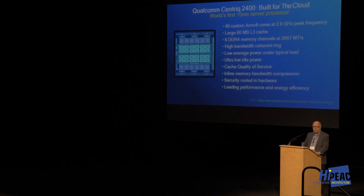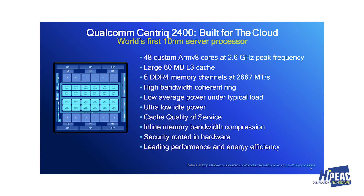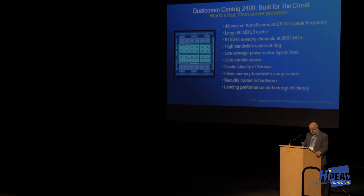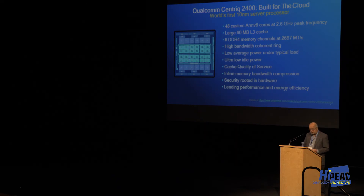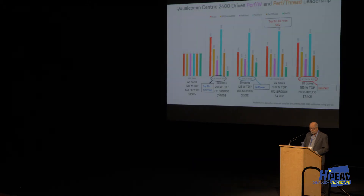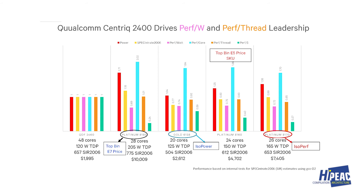What did we do with our first server product? I'm proud to say it's the first 10-nanometer server chip. We have 48 custom ARMv8 cores running at 2.6 GHz with a fairly large cache. If you look at how it compares to a top-end x86 — which is the Skylake I showed you — I've normalized everything to our 48-core processor and compared performance per watt and performance per thread.